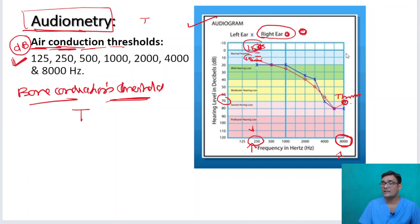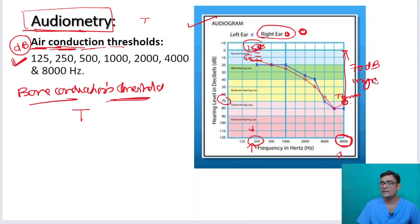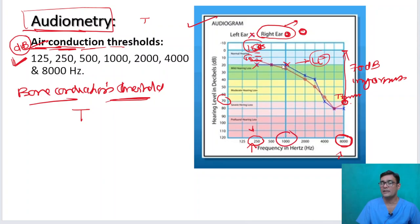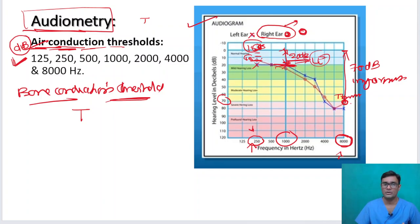A normal person should ideally be able to hear 8000 Hz at 0 decibels. If he can only hear at 70 decibels, that is the hearing impairment. Air conduction is denoted in the right ear by O and left ear by X. For the left ear, at 1000 Hz the patient hears at 20 decibels — that is the hearing threshold, and 20 decibels is the hearing impairment.